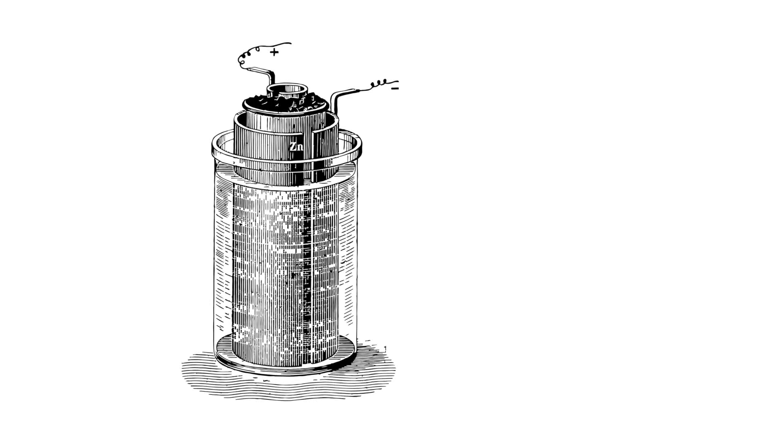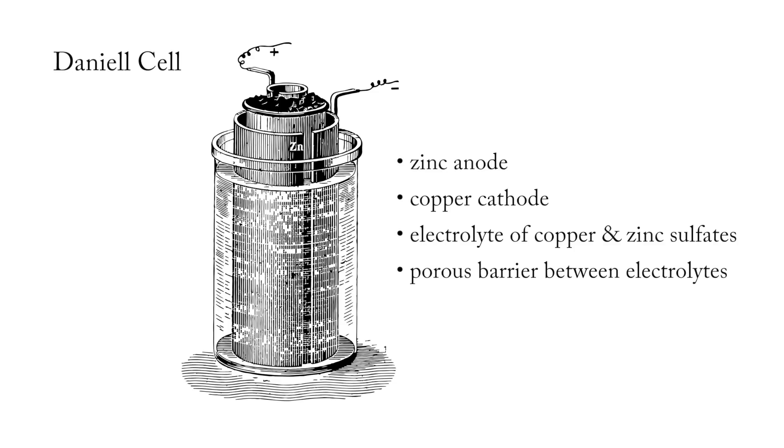But moving away from piles and troughs, in 1836, John Frederick Daniel pushed the battery further with his Daniel cell. The Daniel cell's defining feature was its use of a porous barrier between two different electrolyte solutions. In this example, we see the copper cathode sitting inside of a porous earthenware pot, filled with copper sulfate. This pot is then submerged inside of a container filled with zinc sulfate, and encircled by the zinc anode.